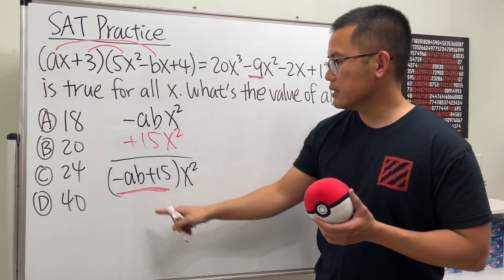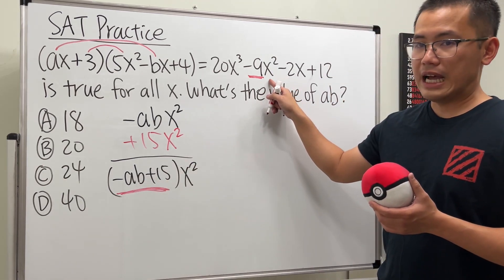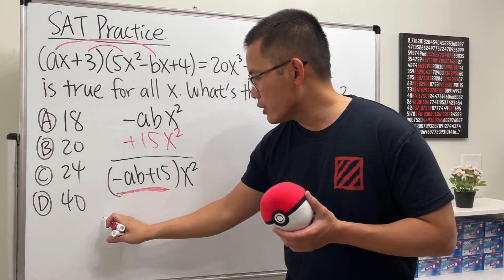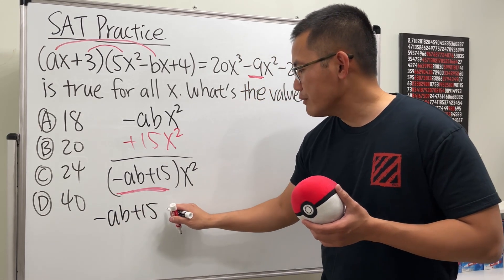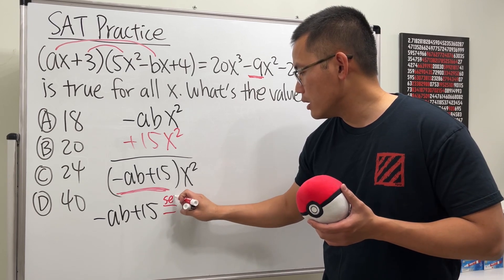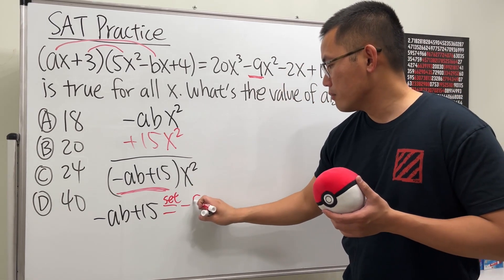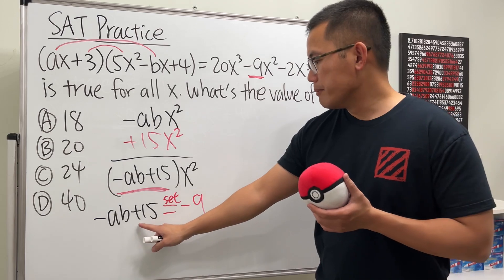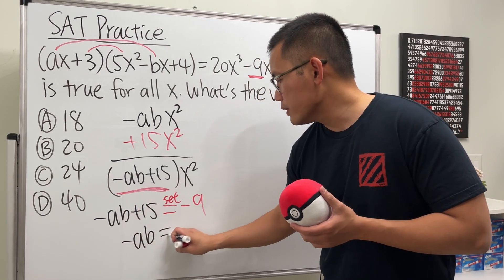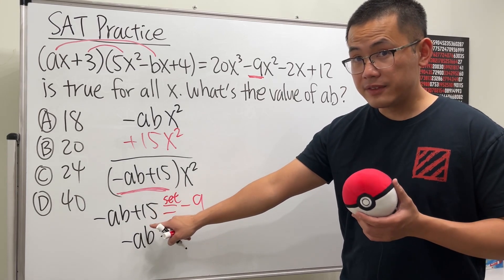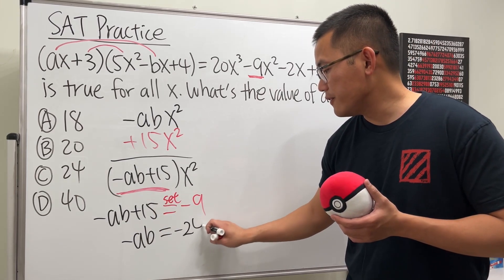So, this means this has to be the same as that. So, all in all, we just have to make sure we get negative ab, plus 15. We have to set this to be negative 9. And then, from here, we can minus 15 on both sides. So, we get negative ab equals negative 9 minus 15. We get negative 24.